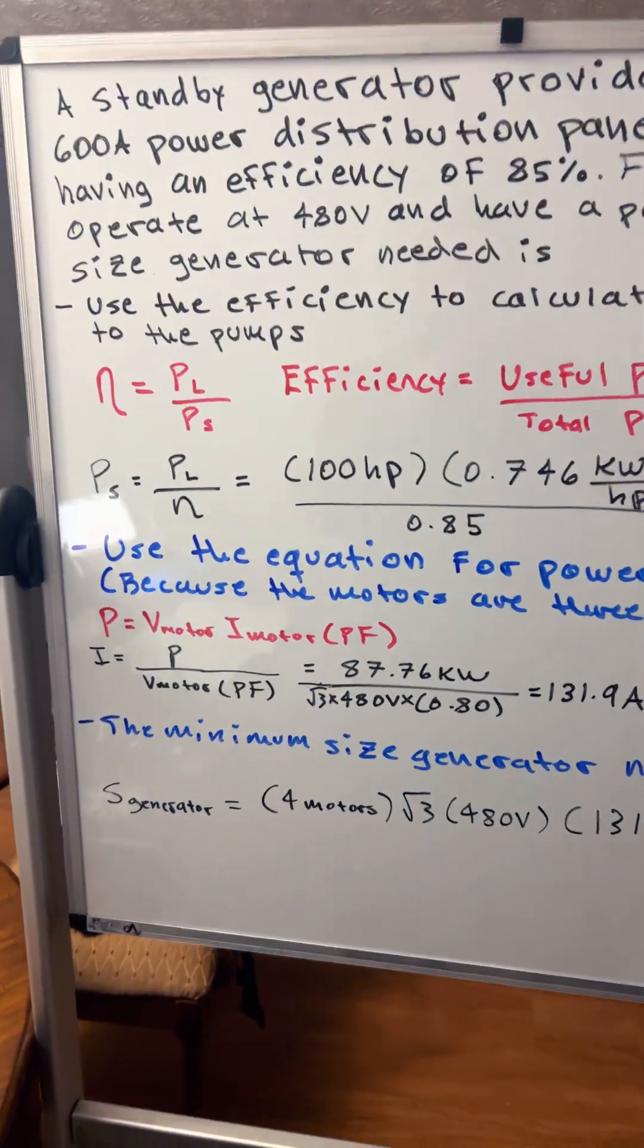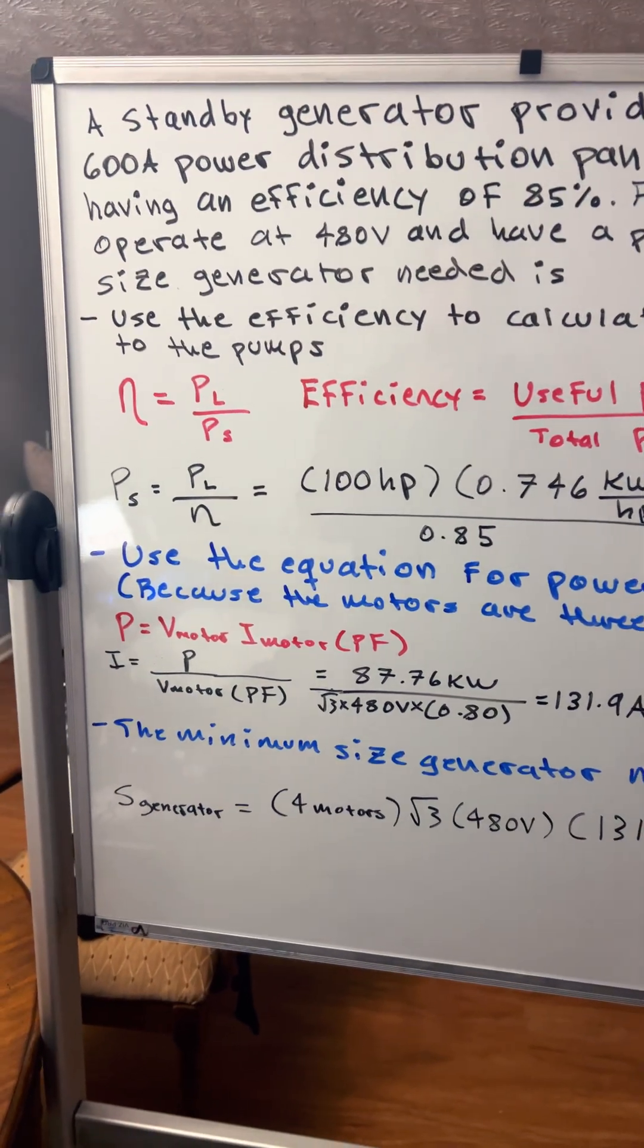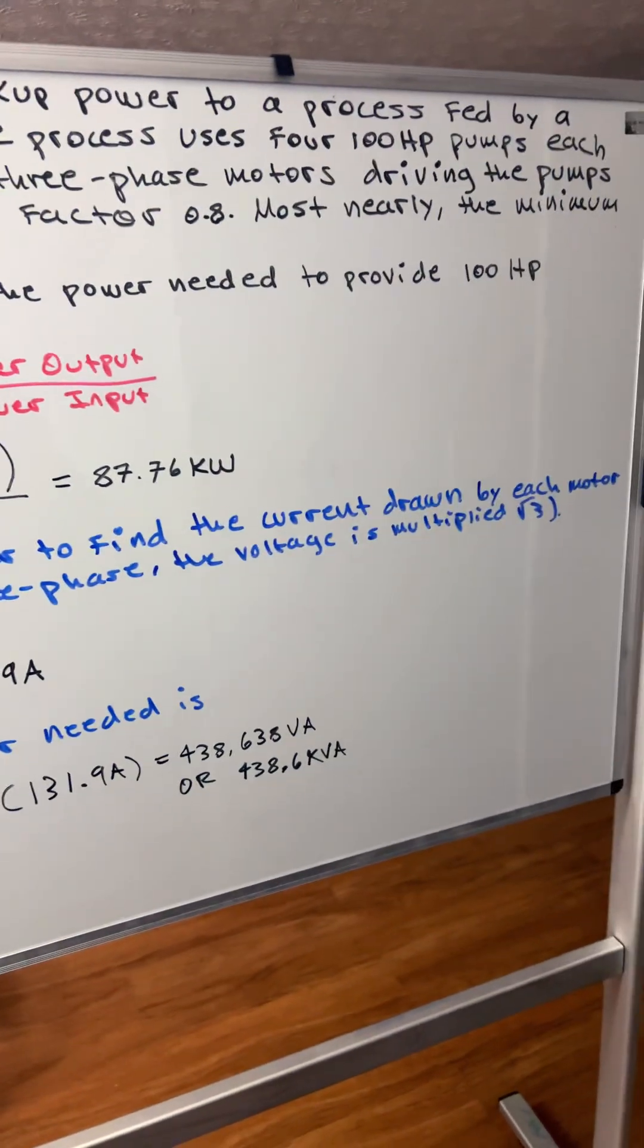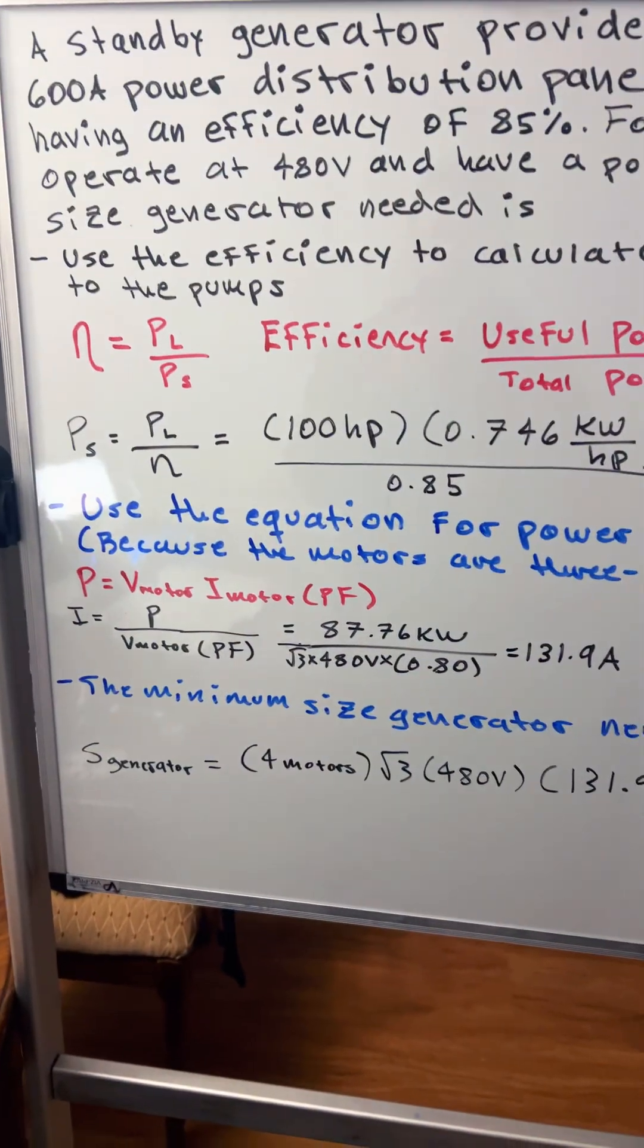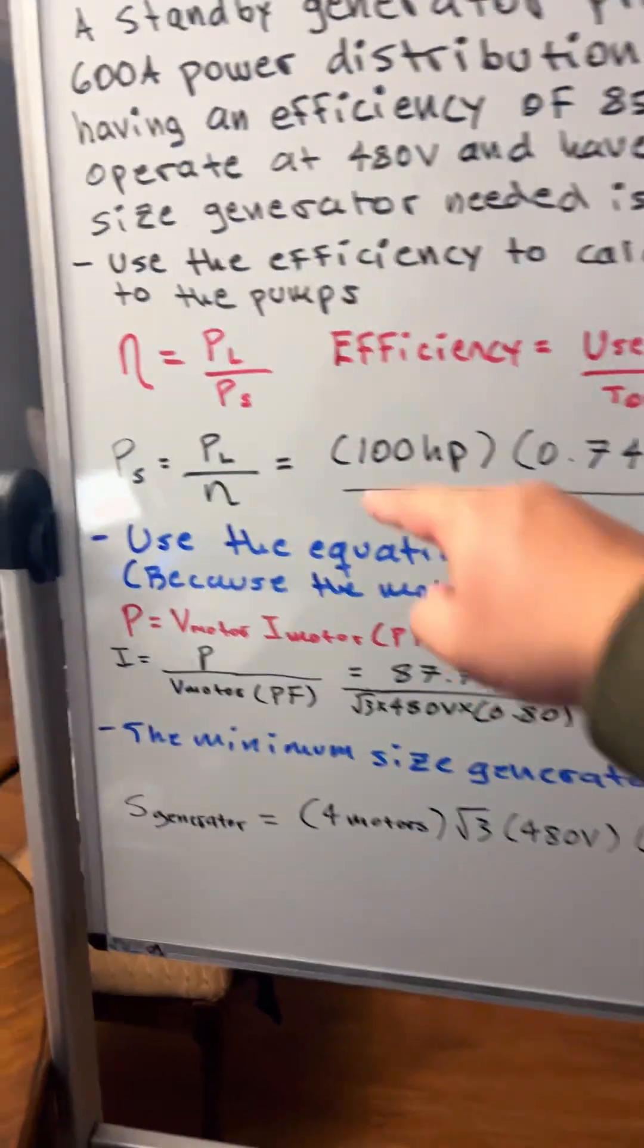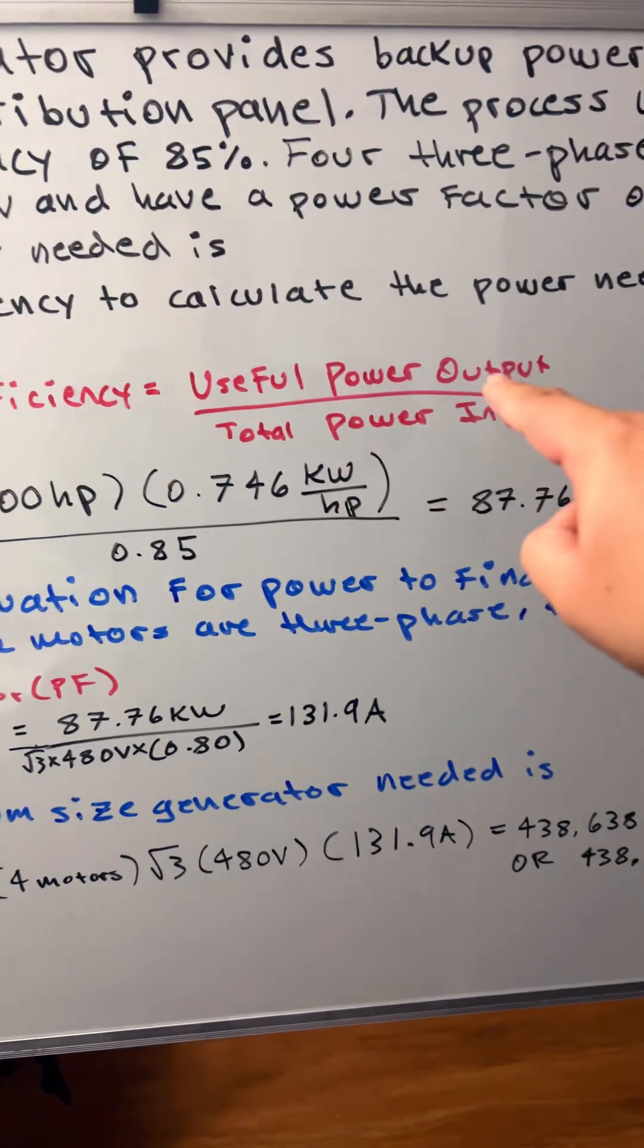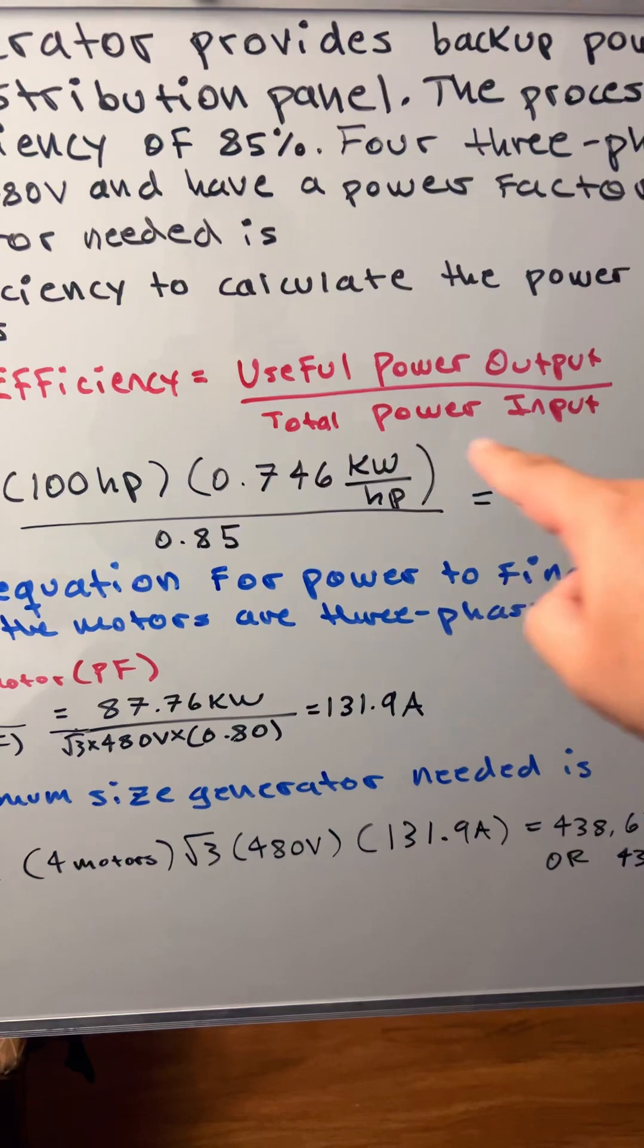The first step is to use the efficiency equation to calculate the power needed to provide 100 horsepower to the pumps. This is the efficiency formula: Efficiency equals useful power output divided by total power input.